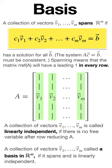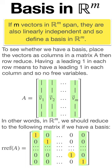If V1 to Vm both span and are linearly independent, they form a basis. In Rm we only need to verify that they span. Having leading ones in each row gives leading ones in each column and so no free variables.